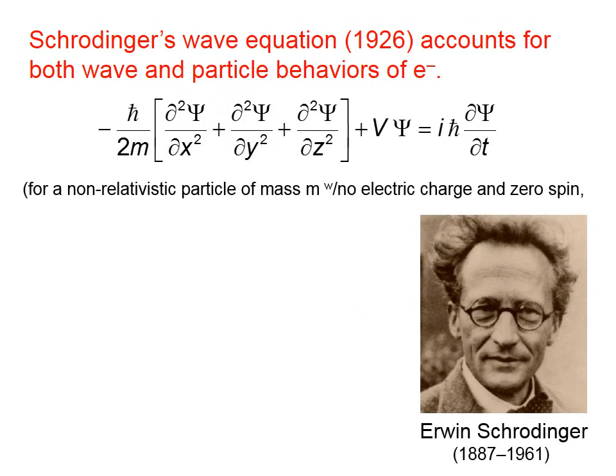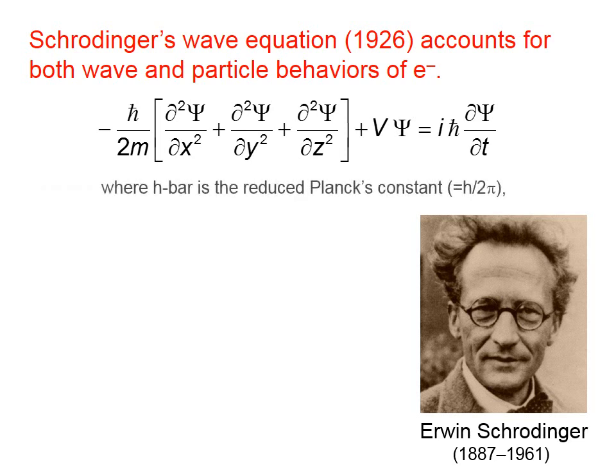There's a picture of Erwin Schrödinger. There is his wave equation - don't bother writing this down - for a non-relativistic particle of mass m with no electric charge and zero spin, where h-bar is the reduced Planck's constant, equal to h over 2π. V is the potential energy, and ψ is the wave function.